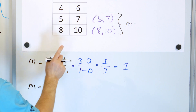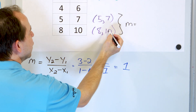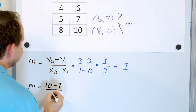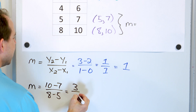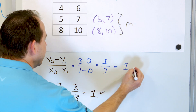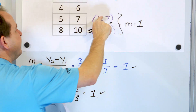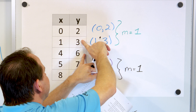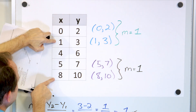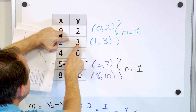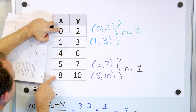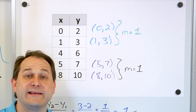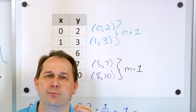Now let's recalculate slope using two other points. I can subtract in any direction I wish as long as I'm consistent. I'll go the y values: 10 minus 7, and the same direction for x: 8 minus 5. So 10 minus 7 is 3, and 8 minus 5 is also 3, so the slope again comes out to be 1. The slope between the first two points is 1, and the slope between these two points is also 1. And here's a spoiler alert: if I pick any other two points — say, 10 minus 3 is 7 and 8 minus 1 is 7, so 7 over 7 is 1. Or 10 minus 2 is 8 and 8 minus 0 is 8, so 8 over 8 is 1. No matter which two points I pick, I always get the same slope.